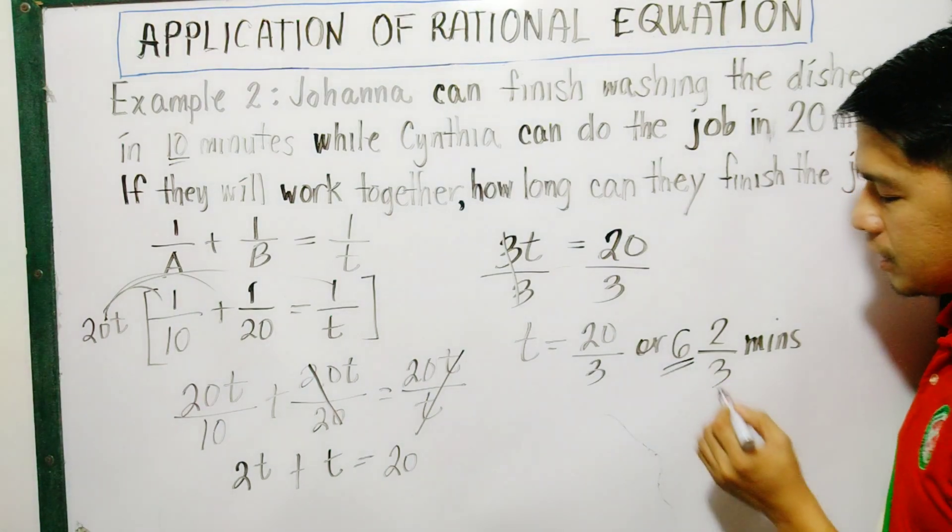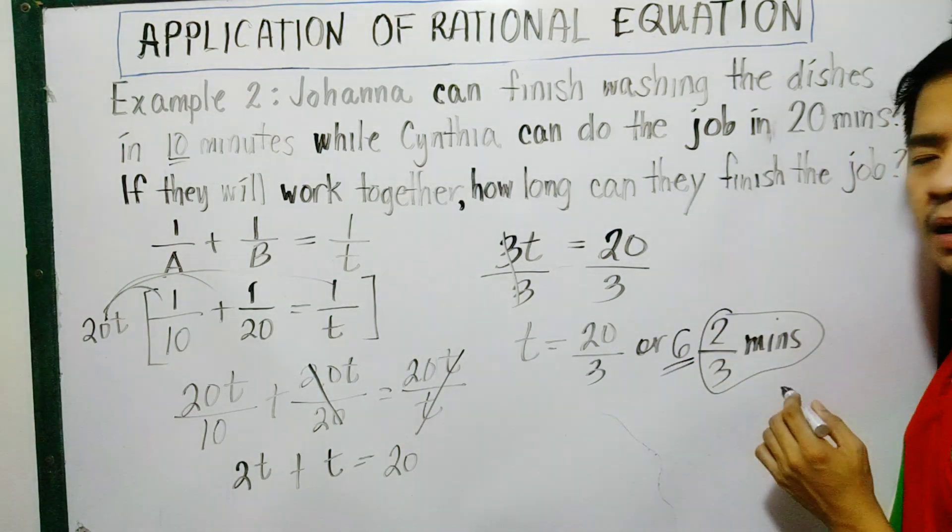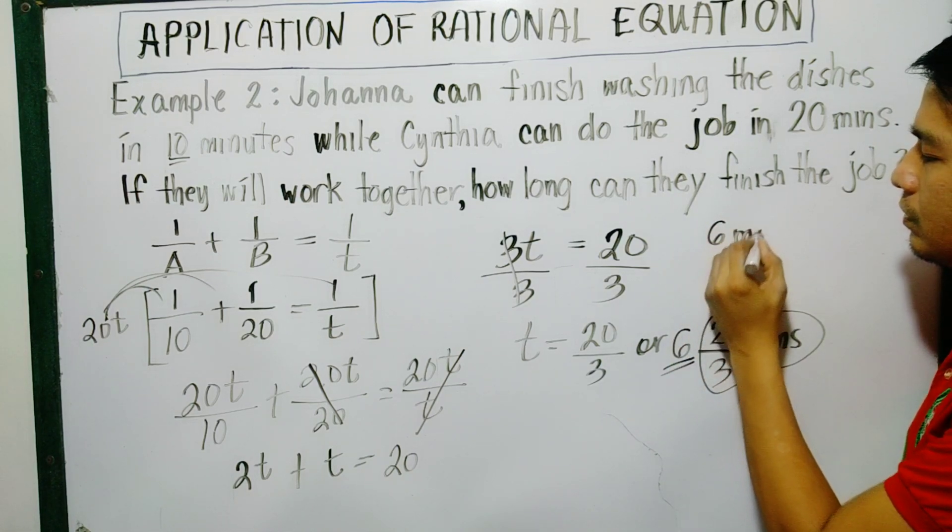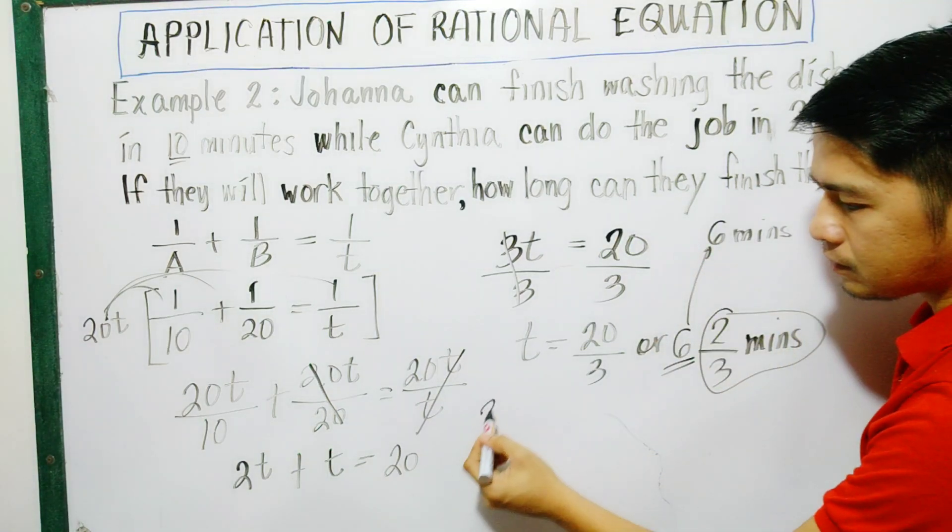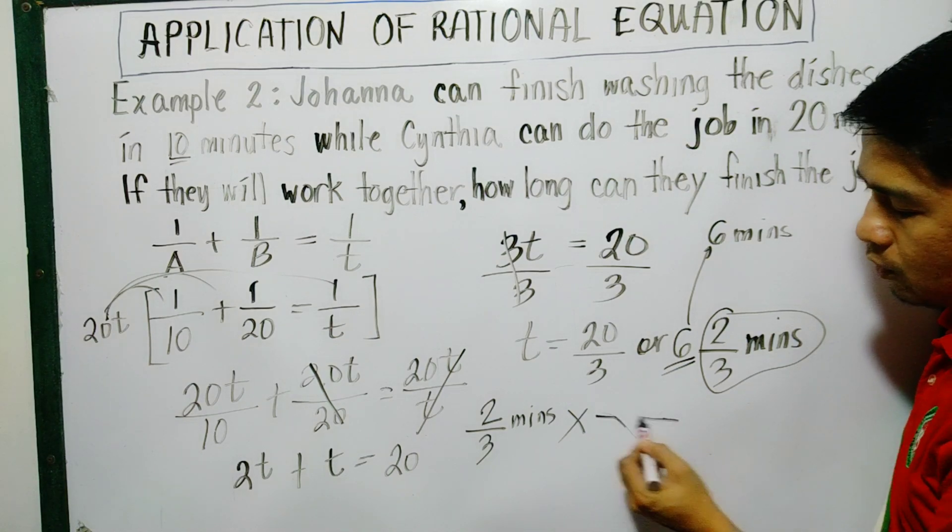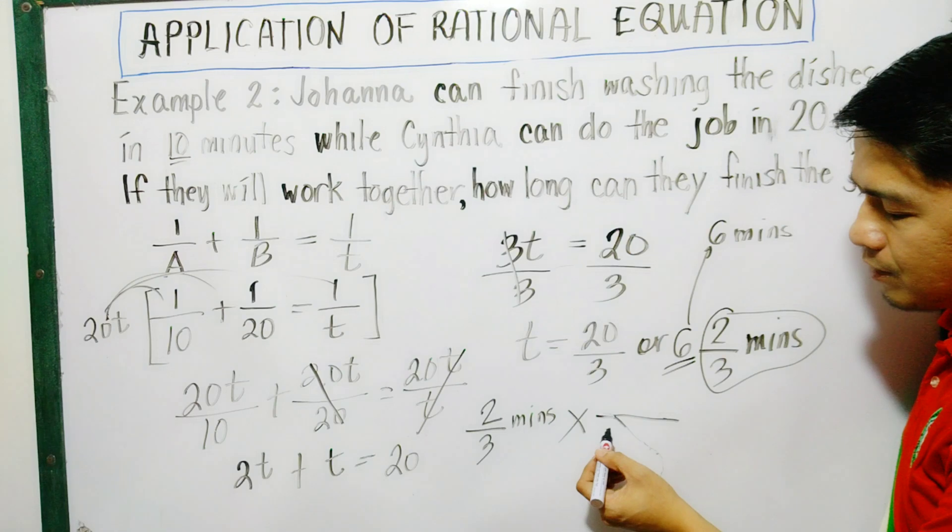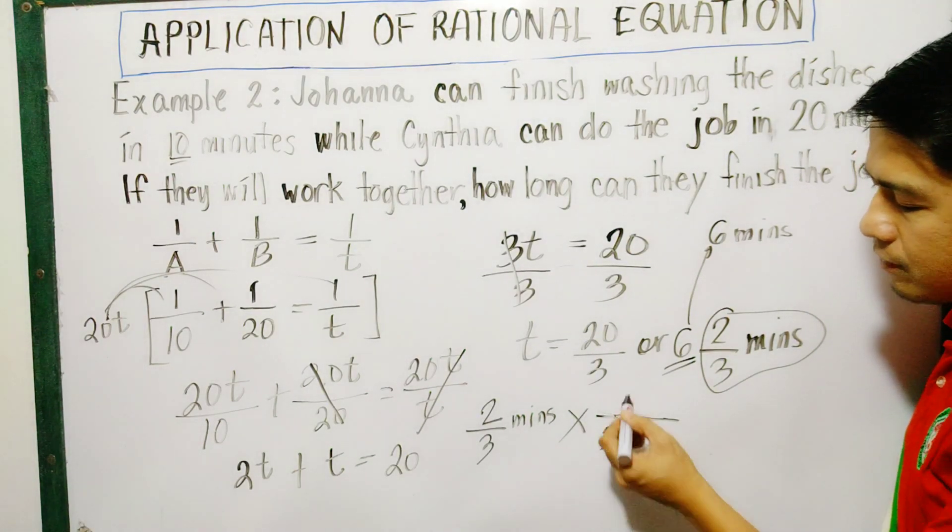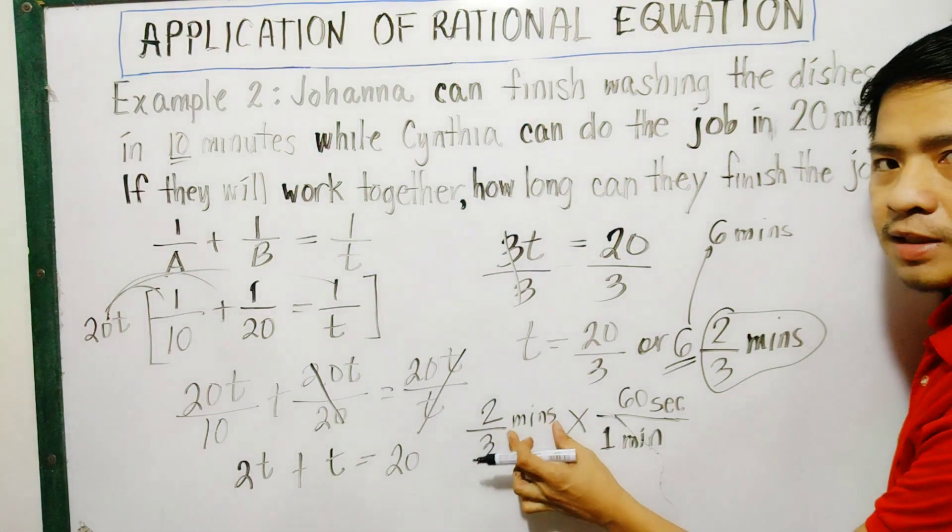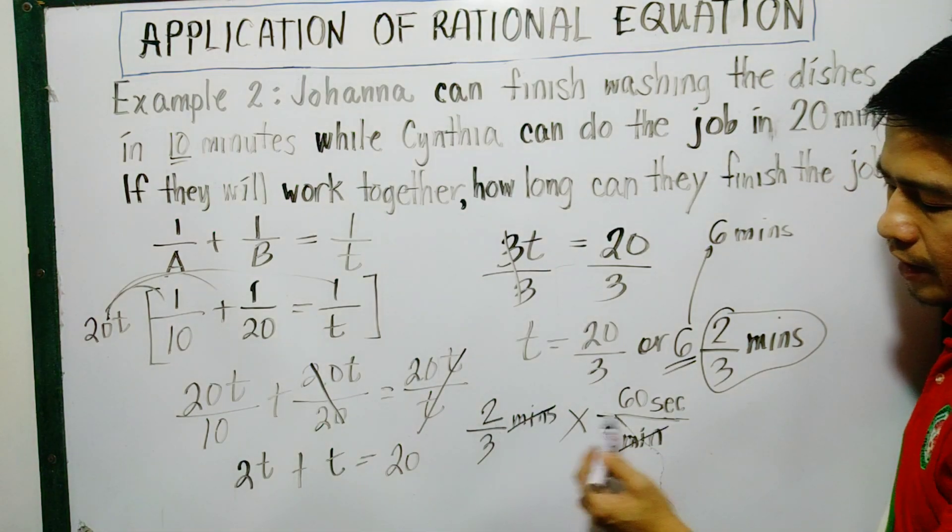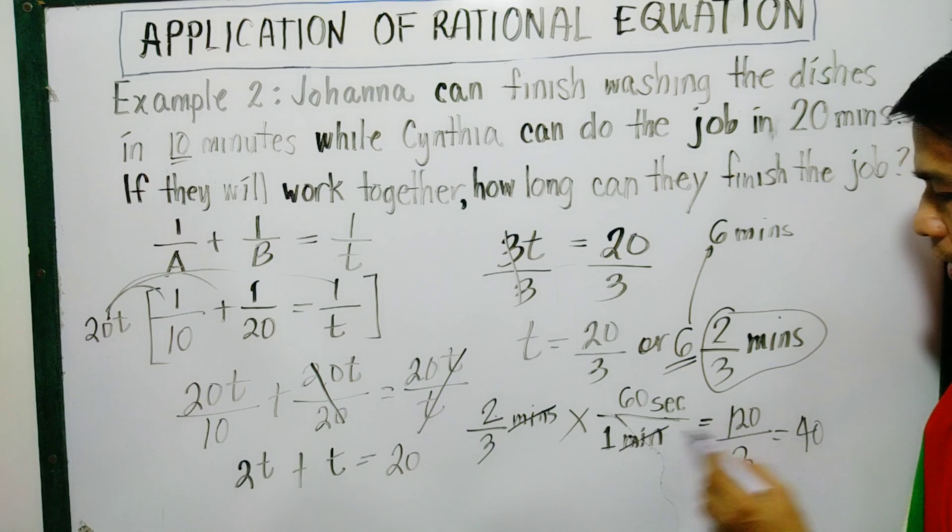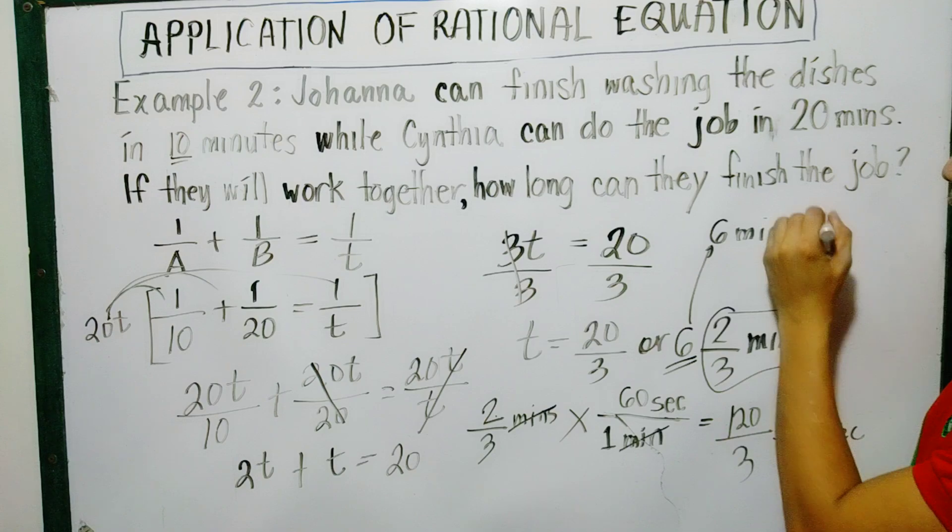So we know this is 6 minutes. What about 2 thirds minutes? With that, let's convert it to seconds. We have 6 minutes here. This 2 thirds minutes, we'll multiply by - for every 1 minute we have 60 seconds. We need minutes at the bottom so it cancels with the minutes on top. It's like multiplication of fractions. 2 times 60 is 120 over 3. Dividing this, it will give us 40. Only seconds remains. Therefore, 6 minutes and 40 seconds.